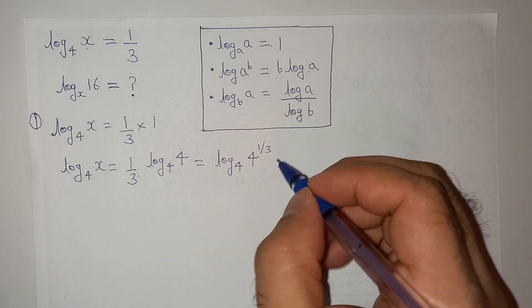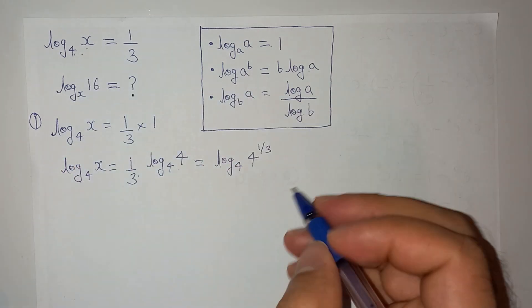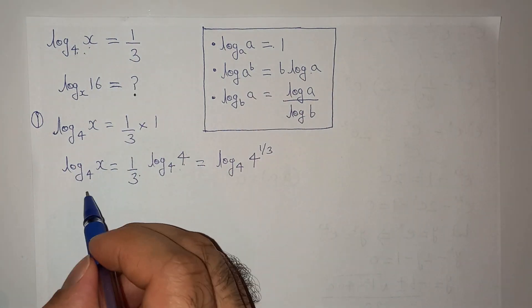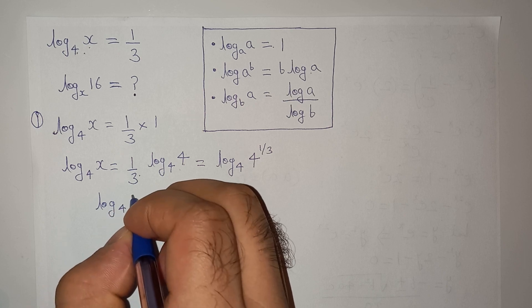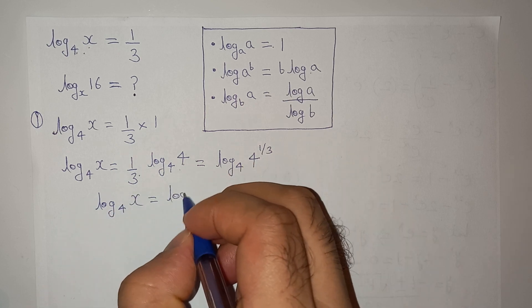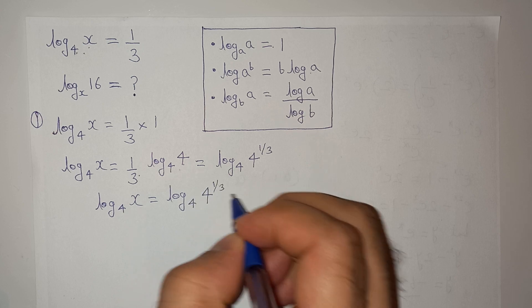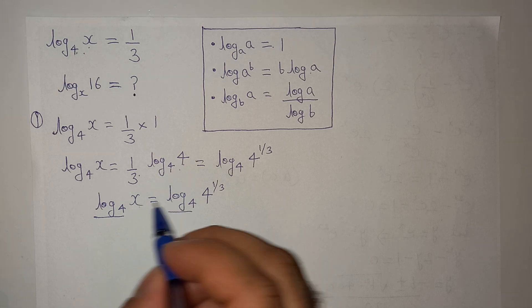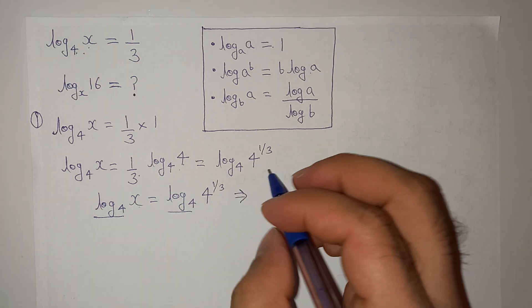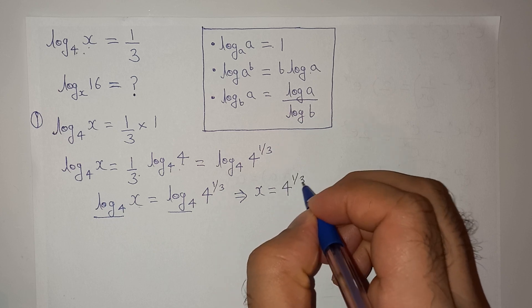Alright, and the question was log₄x. So finally, log₄x equals log₄(4^(1/3)). As we know that this log₄ is the same, we can say that x equals 4^(1/3).